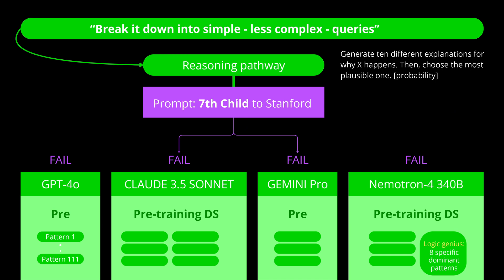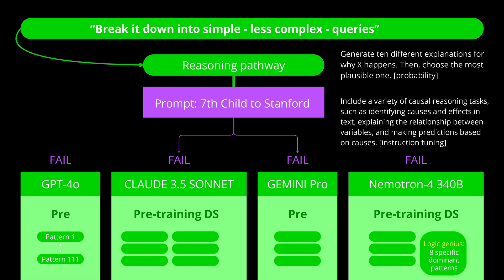I also had three other ideas. I thought maybe the community would go for a probability solution — you just tell the system: generate 10 different explanations for why some event happens, and then choose the most plausible one. Or you have 10 runs and see that 4 runs come to the same conclusion, so you go with the highest probability answer. Or maybe you follow instruction tuning — include a variety of causal reasoning tasks, few-shot examples where you identify causes and effects in the text, explain the relationship between variables, make predictions based on logical causes, and give the idea of instruction tuning — which would enable a system prompt that lets all the models succeed on my user prompt.